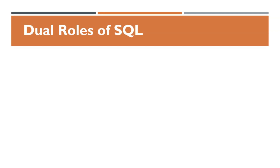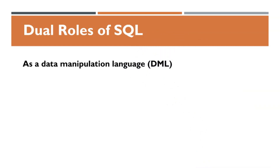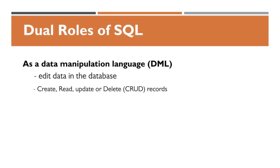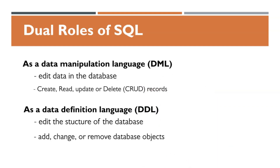Any SQL we write that takes some kind of action is a statement, and sometimes you'll see a statement using the SELECT keyword often called a query. A query suggests that we are asking a question. SQL statements can also be used to add, modify, or delete data in a database, or even create, modify, and remove tables. When we use SQL to work with data in existing tables, that SQL is being used as DML, or Data Manipulation Language. These operations are generally called CRUD — Create, Read, Update, and Delete. When we write SQL to make changes to the structure of tables themselves, that SQL is being used as DDL, or Data Definition Language.